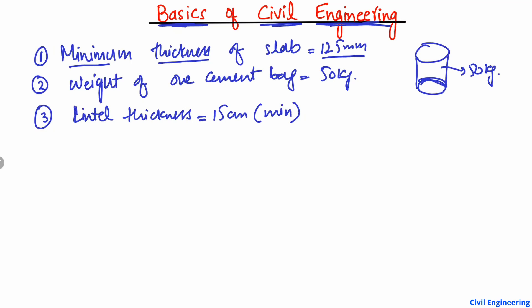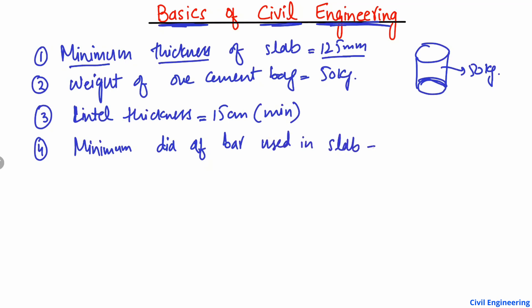The next point is that the minimum diameter of bar used in a slab is 8 millimeters. The minimum diameter of the bar in a slab should be at least 8 millimeters.